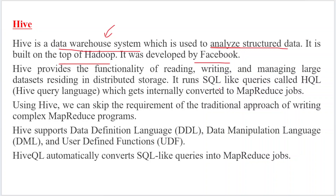MapReduce coding is usually written in Java. If you want to write a simple word count program, you need to write nearly 20 to 40 lines of Java code, which is a very difficult task. In the earlier days, skilled Java professionals were not available. That is why Facebook developed Apache Hive and Yahoo researchers developed Apache Pig in parallel — both with the main aim of running MapReduce jobs more simply.